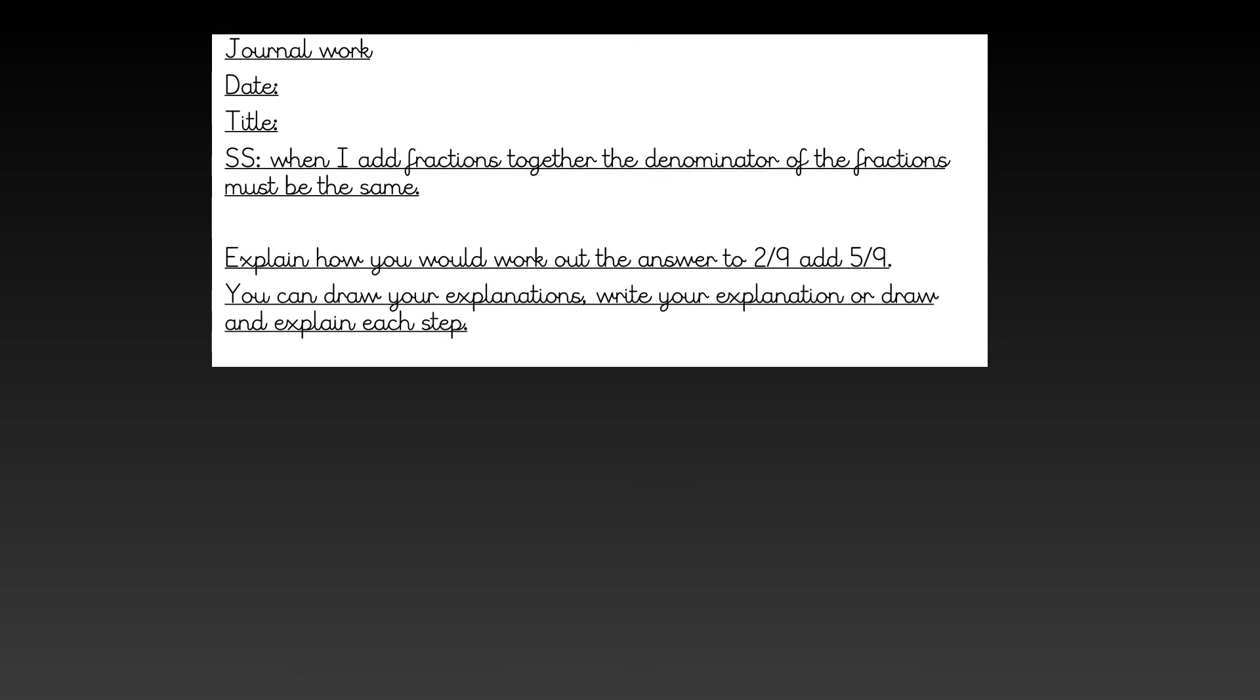The stem sentence states that when I add fractions together, the denominator of the fraction must stay the same. This is the bottom number, the amount as a whole. Now, it's your turn to explain how you would work out the answer for two ninths add five ninths.